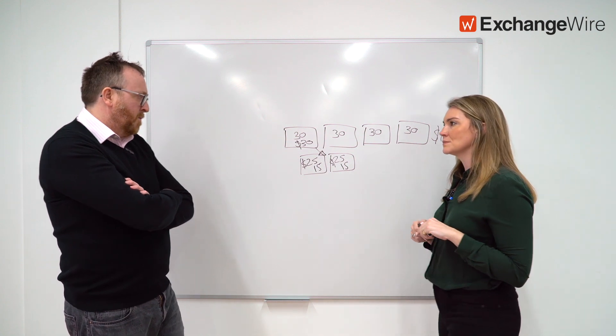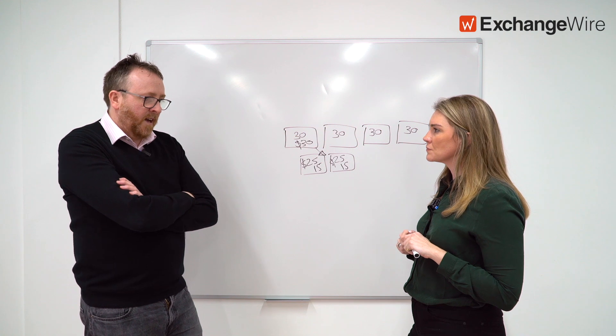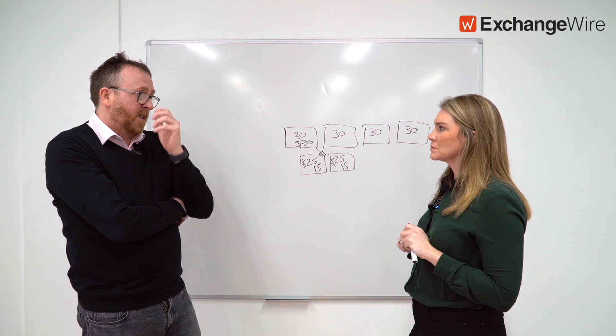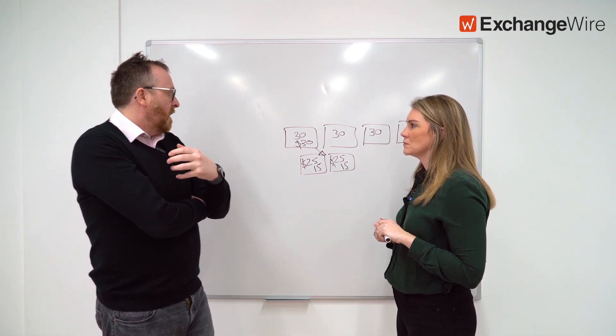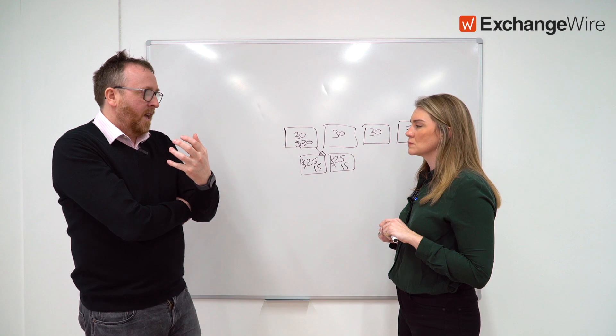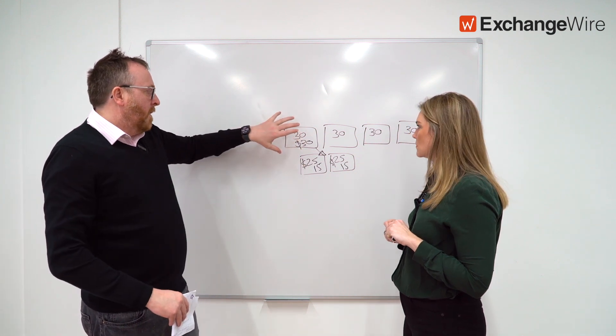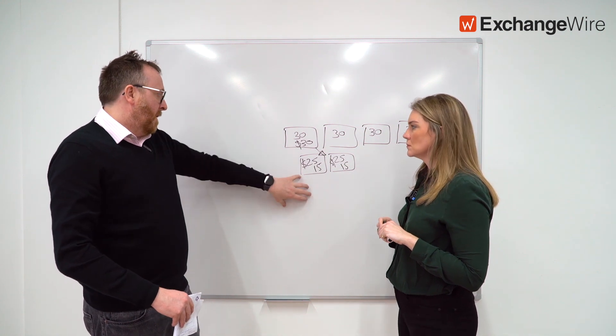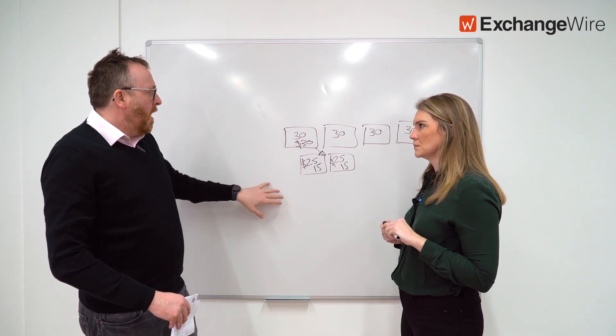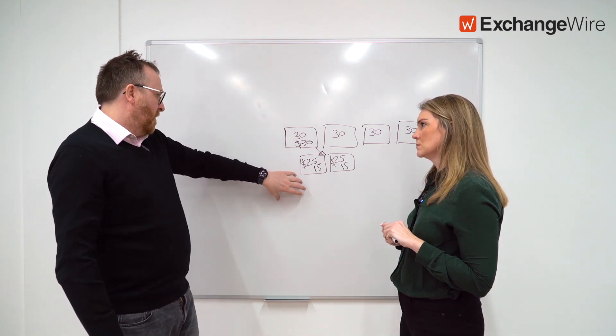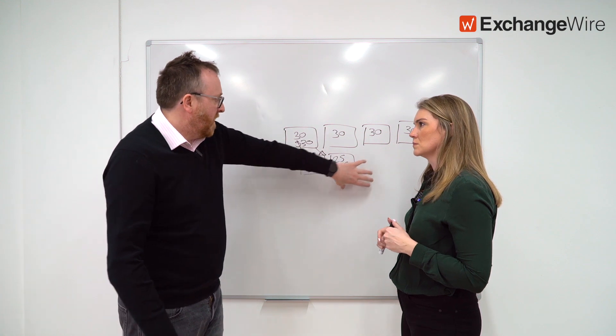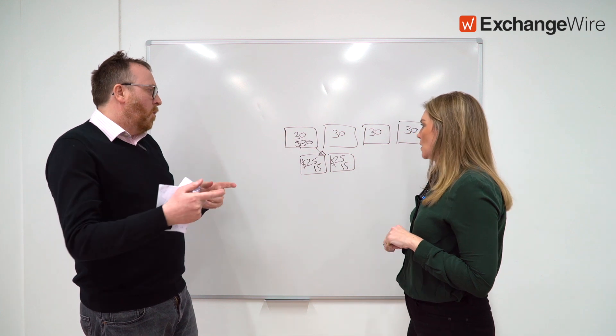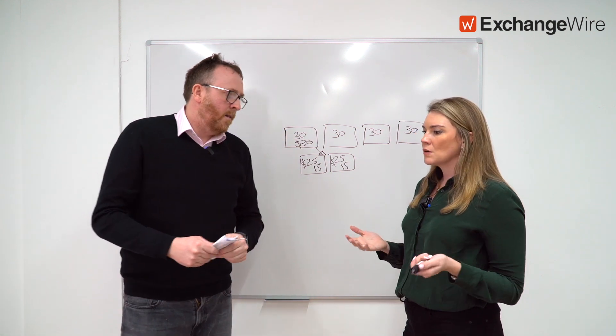If you multiply that across your different ad breaks, it really increases your yield. From a publisher's perspective it's really interesting because they can increase yield. It's all based on the fact that the supply is finite, it's not infinite like the display world. The quality of content is finite, so you want to maximize the most amount of money you get. Why would you be buying on a per second basis though?